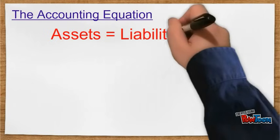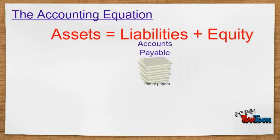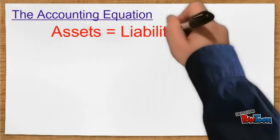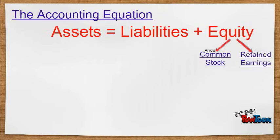Liabilities are the amounts owed to others, including the bills the company has to pay, which is referred to as accounts payable, as well as any loans or notes payable. Equity represents the owner's claim to the business, which can be further broken down into common stock and retained earnings.